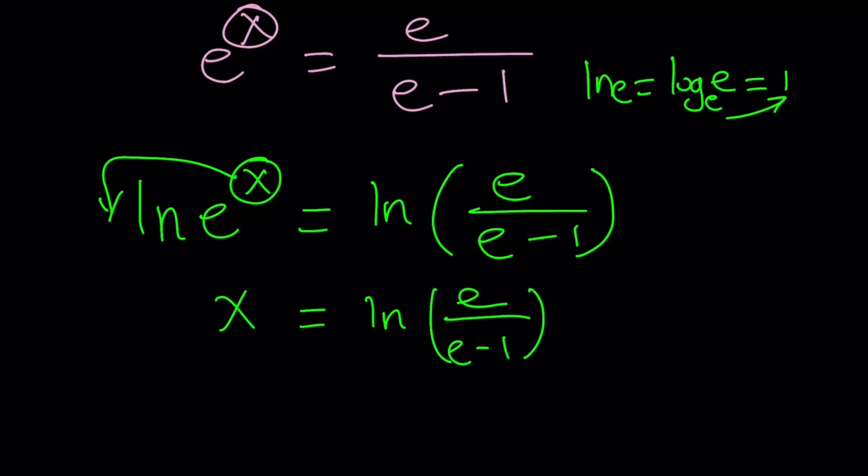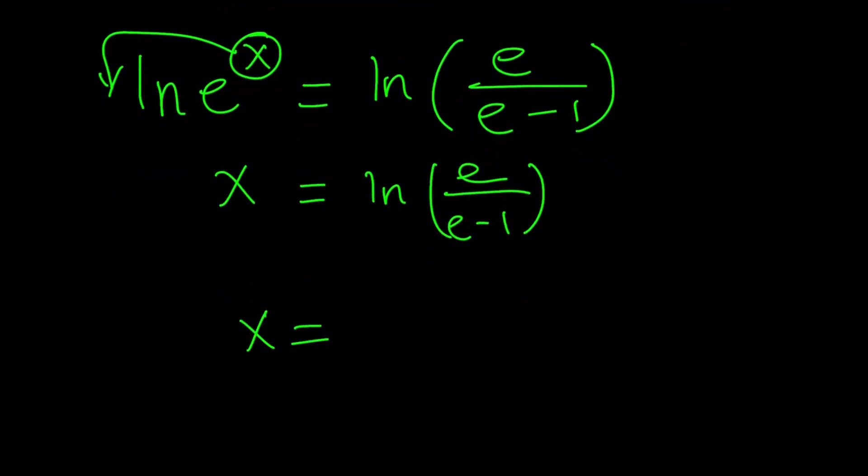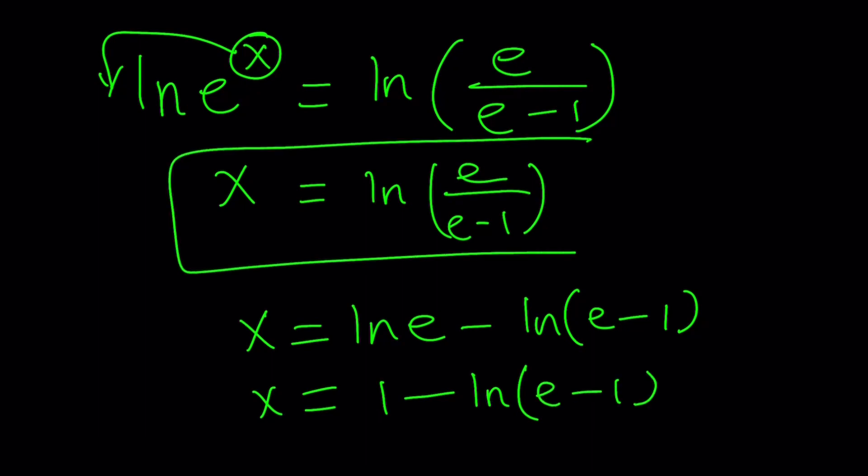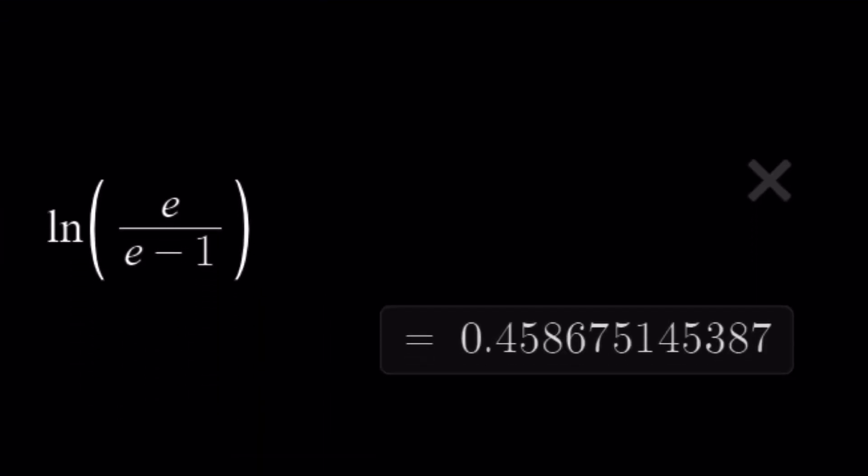Now, ln of e over e minus 1 can also be written a little differently because using properties of logs, ln of e is 1, remember? So we can also write it as 1 minus ln of e minus 1. There's basically two ways, or maybe more ways, I don't know, to write the answer. Let's go ahead and take a look at the numerical value, and we're going to finish up with that.